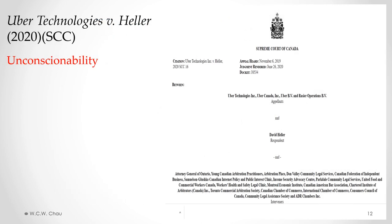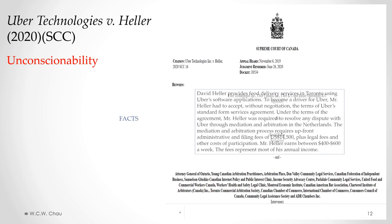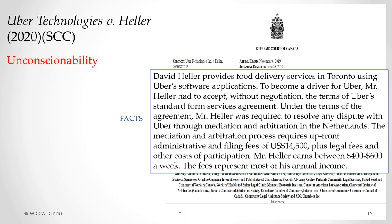The leading case in unconscionability is the Supreme Court of Canada's decision in Uber Technologies and Heller. In that case, David Heller was a driver for Uber delivering food. To become a driver for Uber, he had to accept a standard form contract provided by Uber. Within that contract was an arbitration clause requiring any disputes to be resolved through mediation and arbitration in the Netherlands. The arbitration clause also required an upfront administrative and filing fee of $14,500, plus payment of any legal fees and other costs of participating in the dispute resolution process. Mr. Heller earned between $400 and $600 a week driving for Uber — those fees represented most of his annual income.